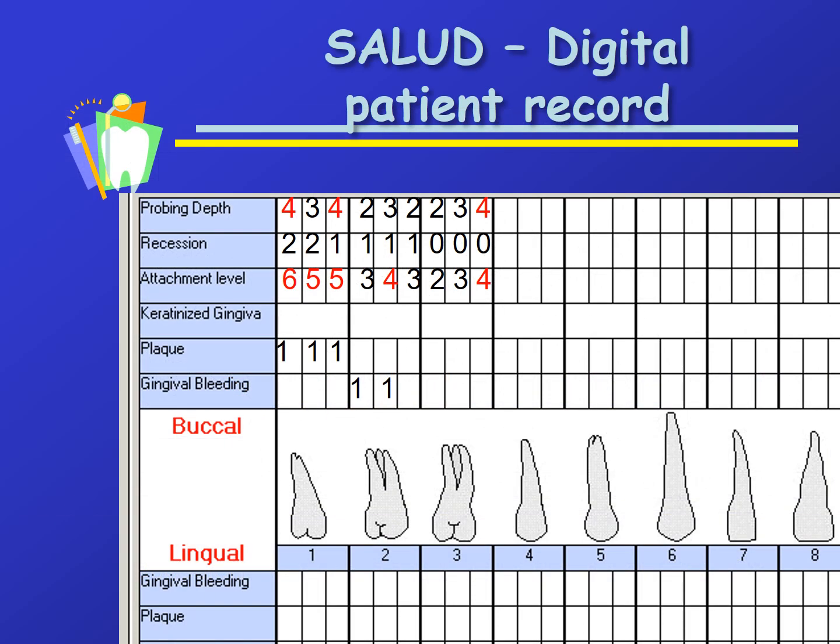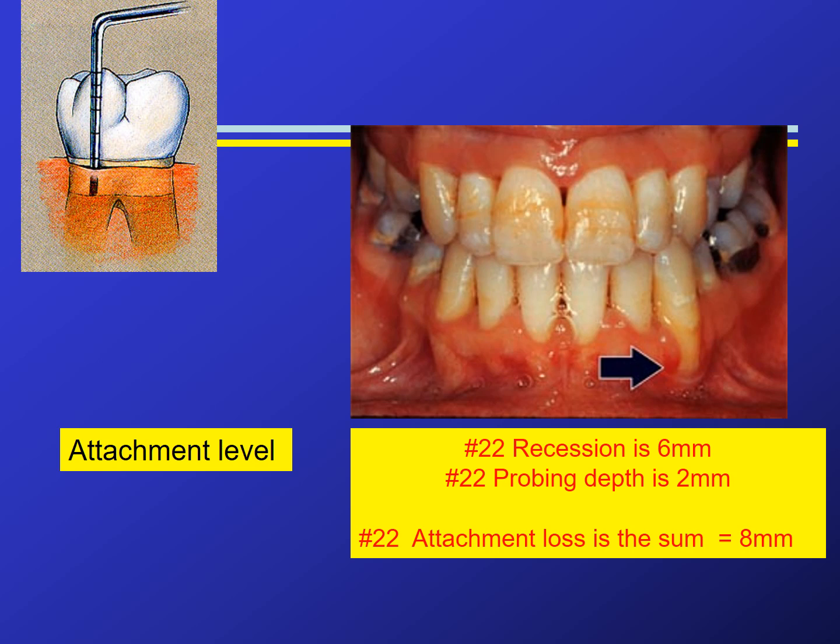When plaque is present, click in the field and the computer places a 1 to denote plaque is present. Tooth number 1 in the example has plaque at the distobuccal, straight buccal, and mesiobuccal. The charting tells us that tooth number 2 has bleeding on probing at the distobuccal and straight buccal. The attachment level is the sum of the pocket depth and the recession — that tells us how far apically the gingiva is attached to the root. The computer does the math after we input the recession and probing depth. For example: 6 mm recession plus 2 mm pocket depth equals 8 mm of attachment loss.